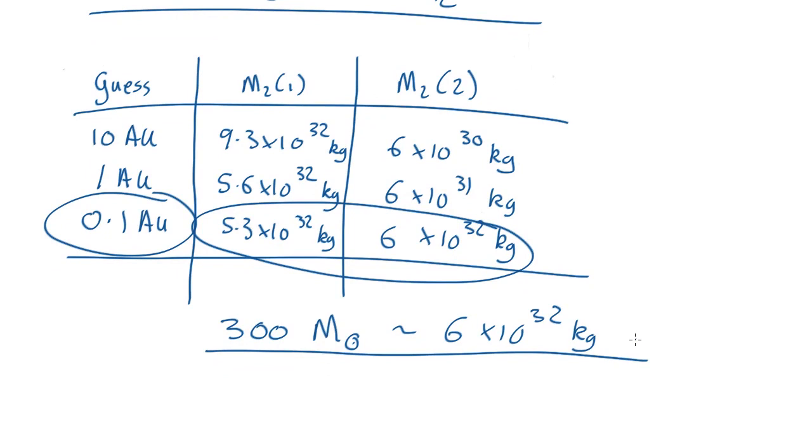And because the second object is so much more massive, as the star moves around its center of mass, the mystery object is much closer to the center of mass. So here is only 0.1 astronomical units whereas this is 30 astronomical units. So that's what we've got.